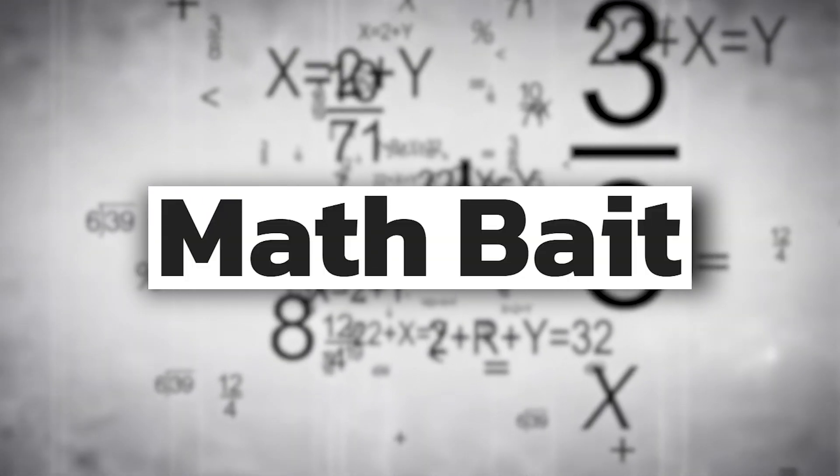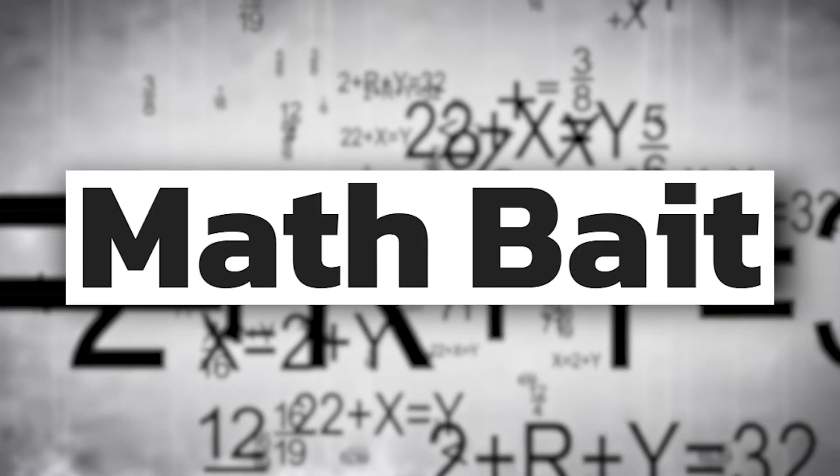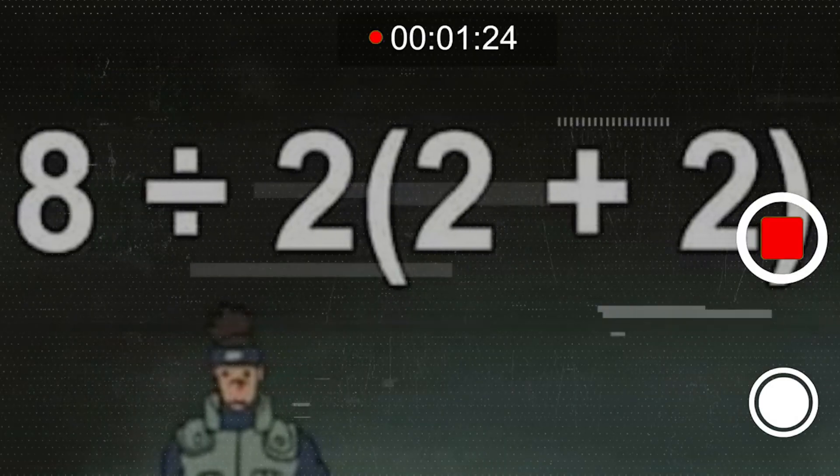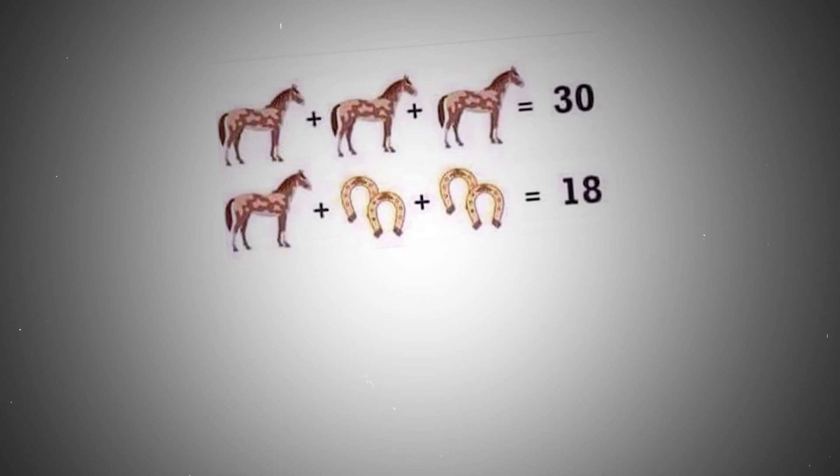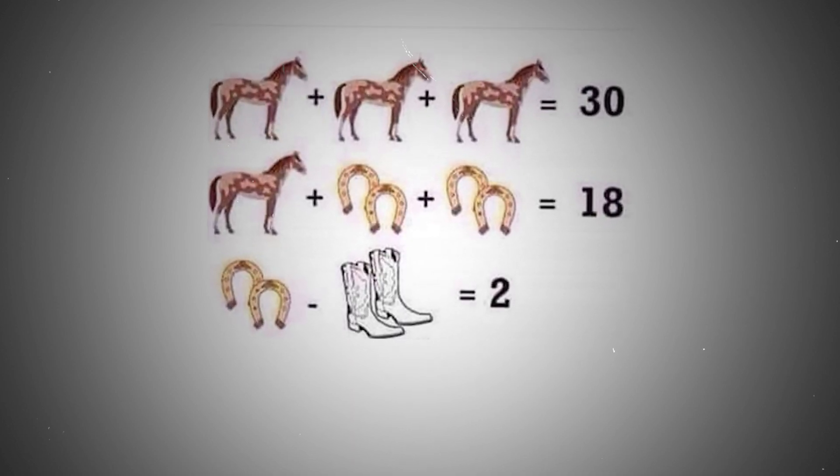Viral math problems, or math bait, are math problems deliberately presented in a vague manner. They are often shared online to generate debate, as people provide different answers based on their interpretation of the order of operations.